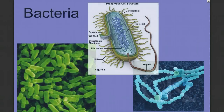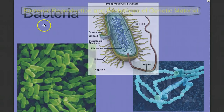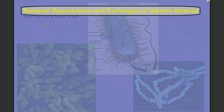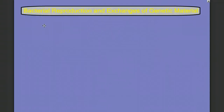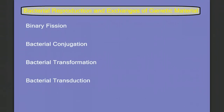We've been talking about bacteria, but in this video today, we're going to talk about bacterial reproduction and exchange of genetic material within the bacteria. There are four different processes we're going to discuss: binary fission, bacterial conjugation, bacterial transformation, and bacterial transduction.